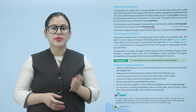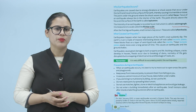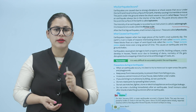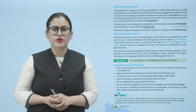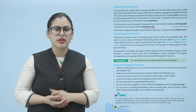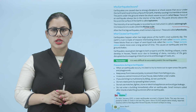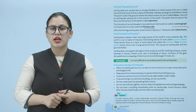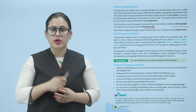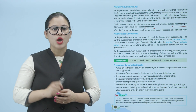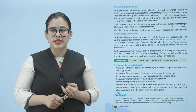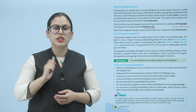When an earthquake occurs, it is best to move out to open areas like parks and playgrounds. Keep away from trees and poles to prevent them from falling. If you cannot move out of your house, take shelter under a table. If you are living in a multi-story building, do not use the lift. Do not create panic by spreading false rumors. Do not use matchsticks, lighters, stoves or electrical appliances and avoid gas leakage. Do not enter a building immediately after an earthquake, as small tremors called aftershocks can shake the ground even after an earthquake.